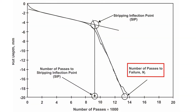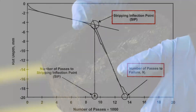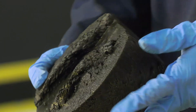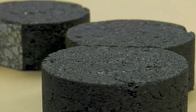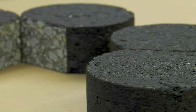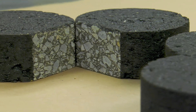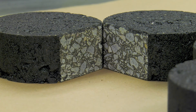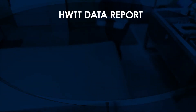Analyze the test data for number of passes to failure and stripping inflection points as described in the standard or methods specified by the agency. The rut depth can be taken as an average value of the five middle deformation locations. For a typical Hamburg wheel track test result report, two sets or pairs of SGC specimens are tested, using a total of four SGC specimens.